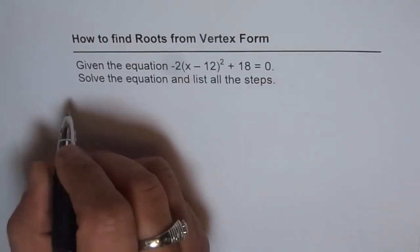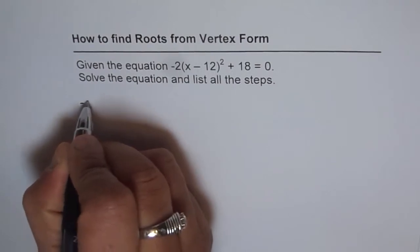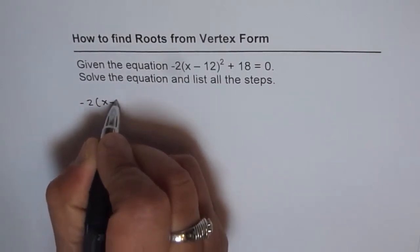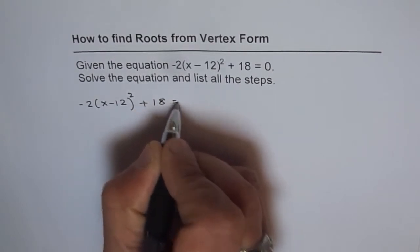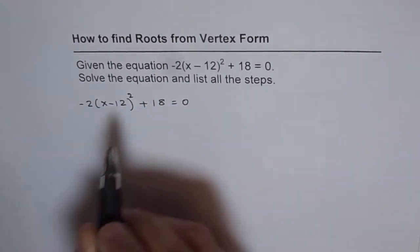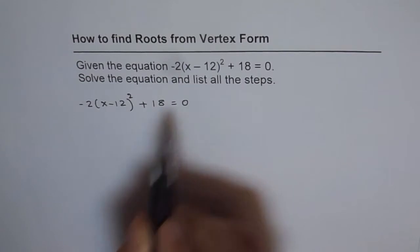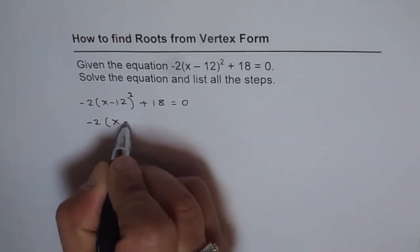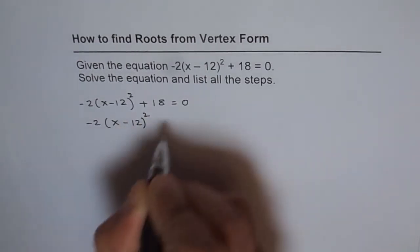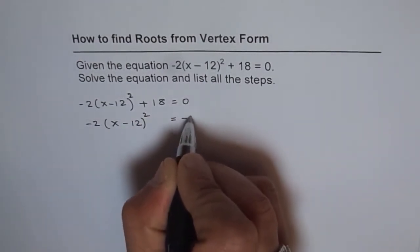The equation before us is -2(x - 12)² + 18 = 0. The first step is to take the constant term on the right hand side. When we do that, we get -2(x - 12)² = -18.